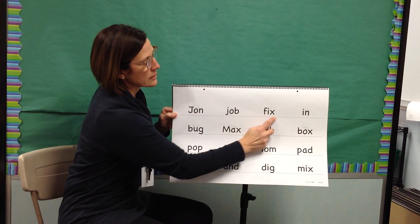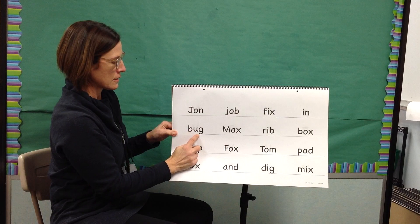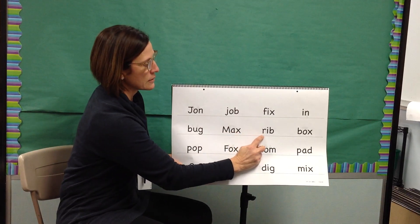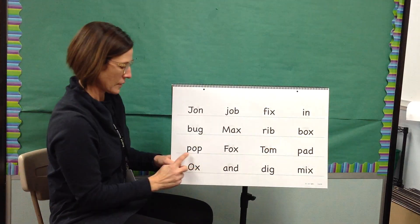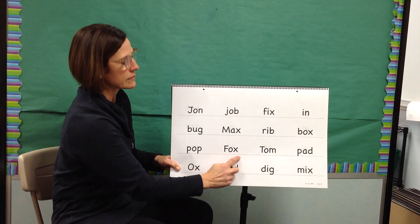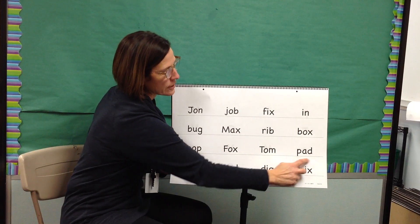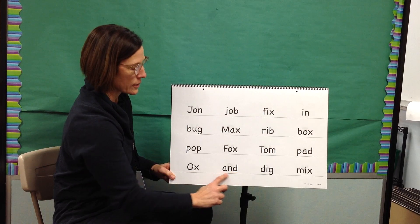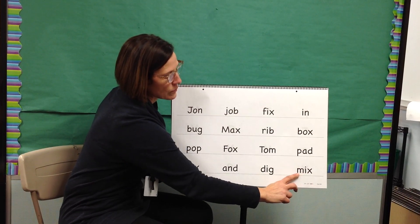Blend: Fix. Word: Fix. Blend: In. Word: In. Blend: Bug. Word: Bug. Blend: Max. Word: Max. Blend: Rib. Word: Rib. Blend: Box. Word: Box. Blend: Pop. Word: Pop. Blend: Fox. Word: Fox. Blend: Tom. Word: Tom. Blend: Pad. Word: Pad. Blend: Ox. Word: Ox. Blend: And. Word: And. Blend: Dig. Word: Dig. Blend: Mix. Word: Mix. Yes, mix.